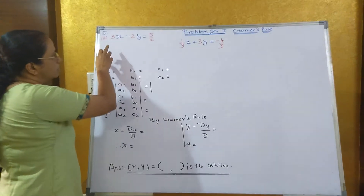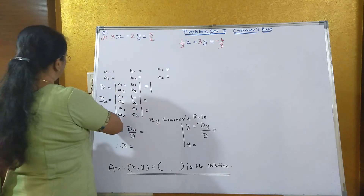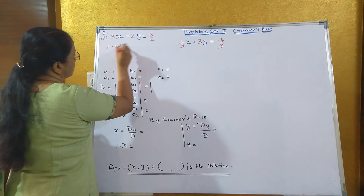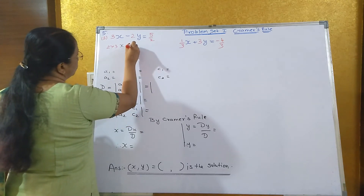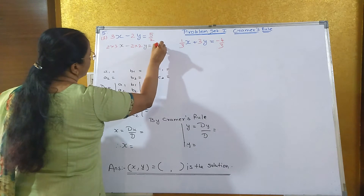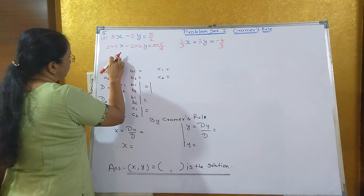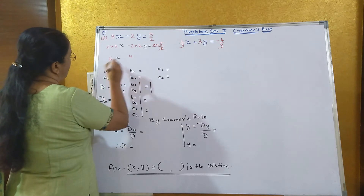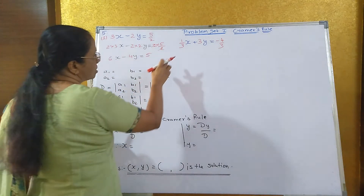Sum number 5: the first equation is 3x minus 2y equals 5/2. Since it is a fraction, the LCM is 2, so multiply throughout by 2. 2 into 3x minus 2 into 2y equals 2 into 5/2. The 2s cancel, giving the first equation: 6x minus 4y equals 5.